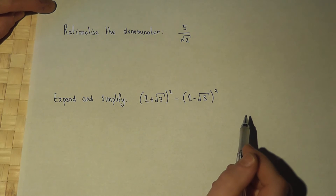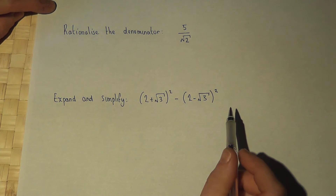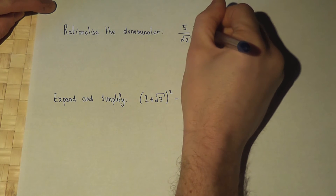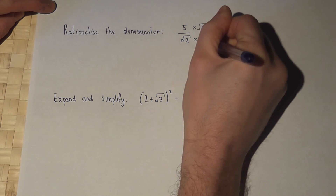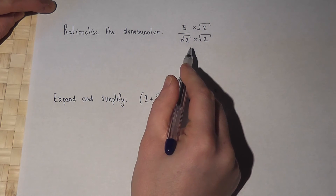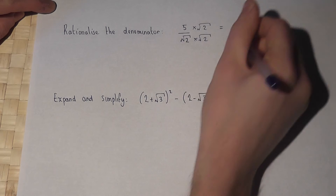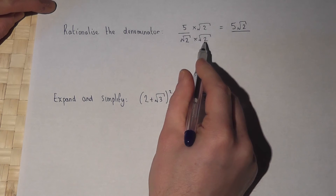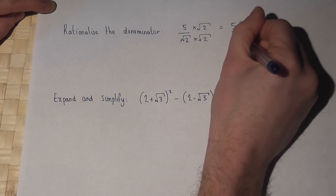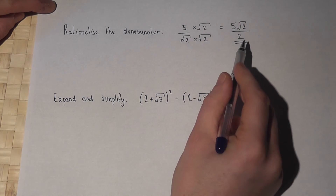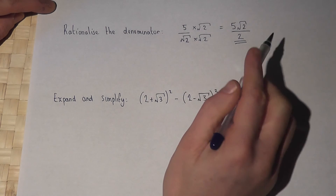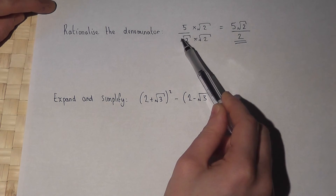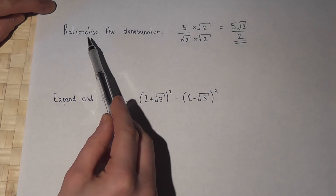This section looks at two more surd questions. The first is to rationalize the denominator of 5 over root 2. We multiply the top and bottom by root 2: the top becomes 5 root 2, and the bottom becomes root 2 times root 2, which is root 4, which is just 2. We've moved the square root from the bottom to the top, so the denominator has been rationalized.